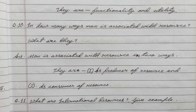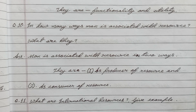Question number ten: In how many ways is man associated with resource, and what are they? Answer: Man is associated with resource in two ways - they are as producer of resource and as consumer of resource.